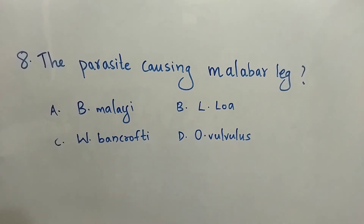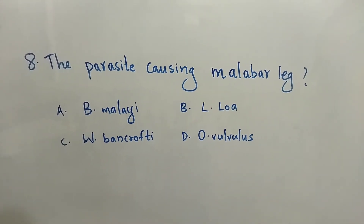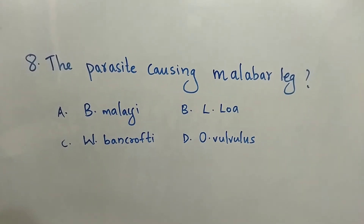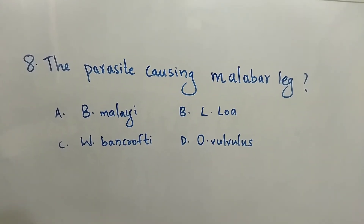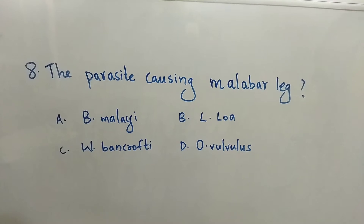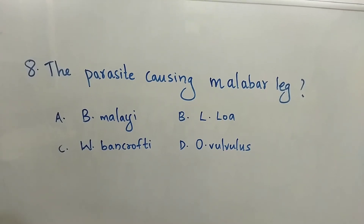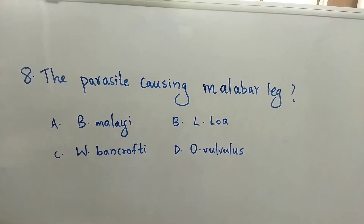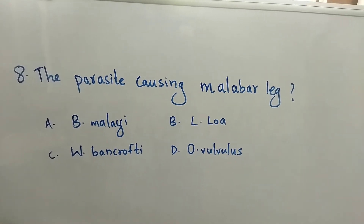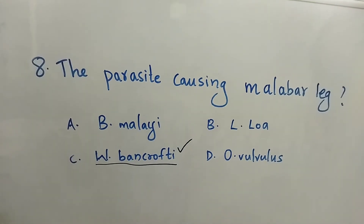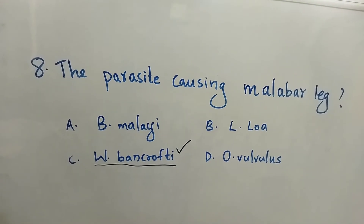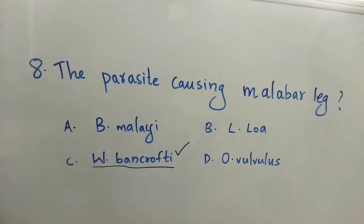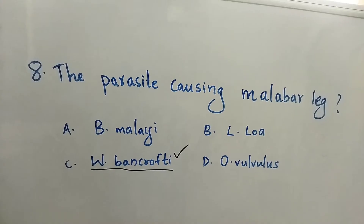Question number 8: The parasite causing Malabar itch — Option A: Brugia malayi. Option B: Loa loa. Option C: Wuchereria bancrofti. Option D: Onchocerca volvulus. The right answer is Option C, Wuchereria bancrofti. The parasite causing Malabar itch is Wuchereria bancrofti.